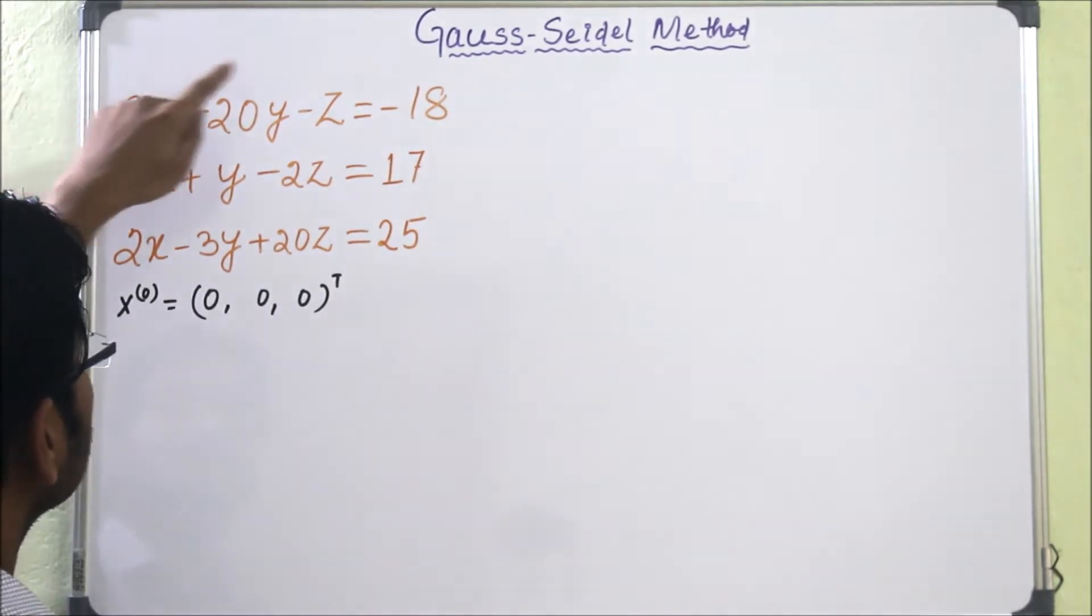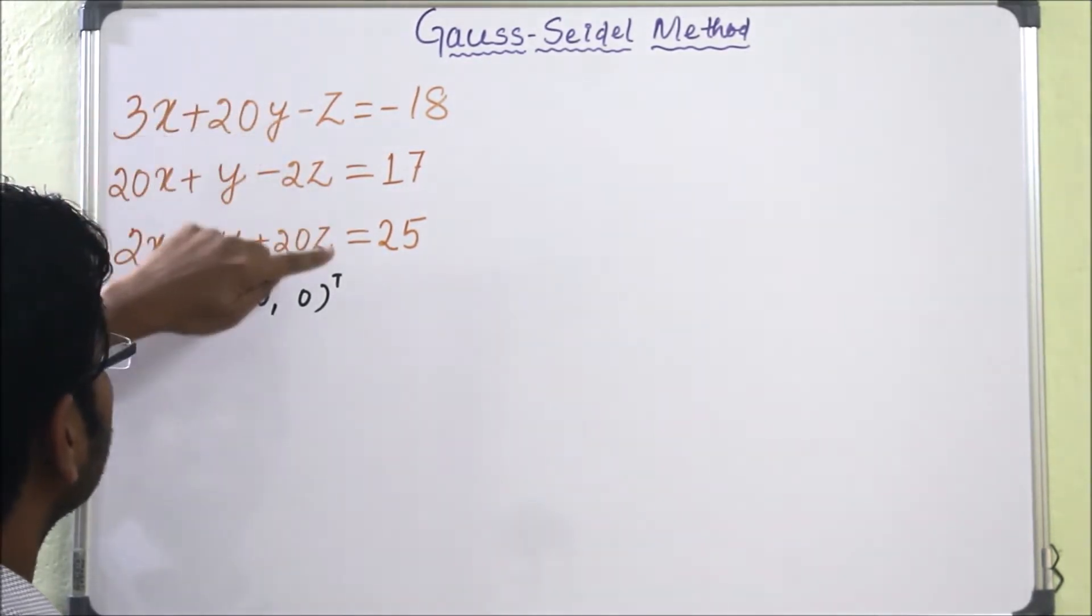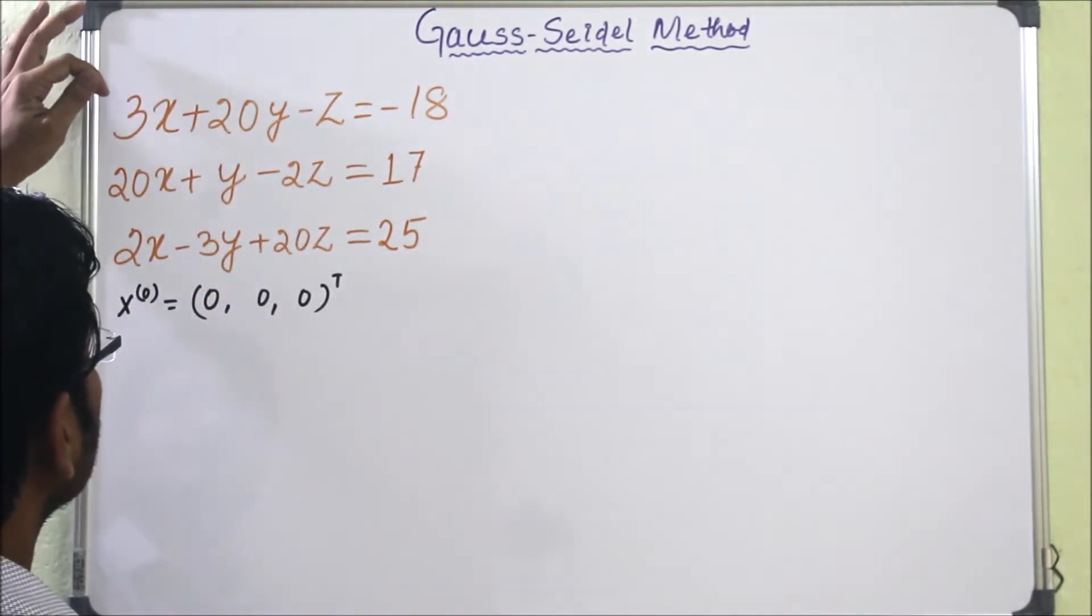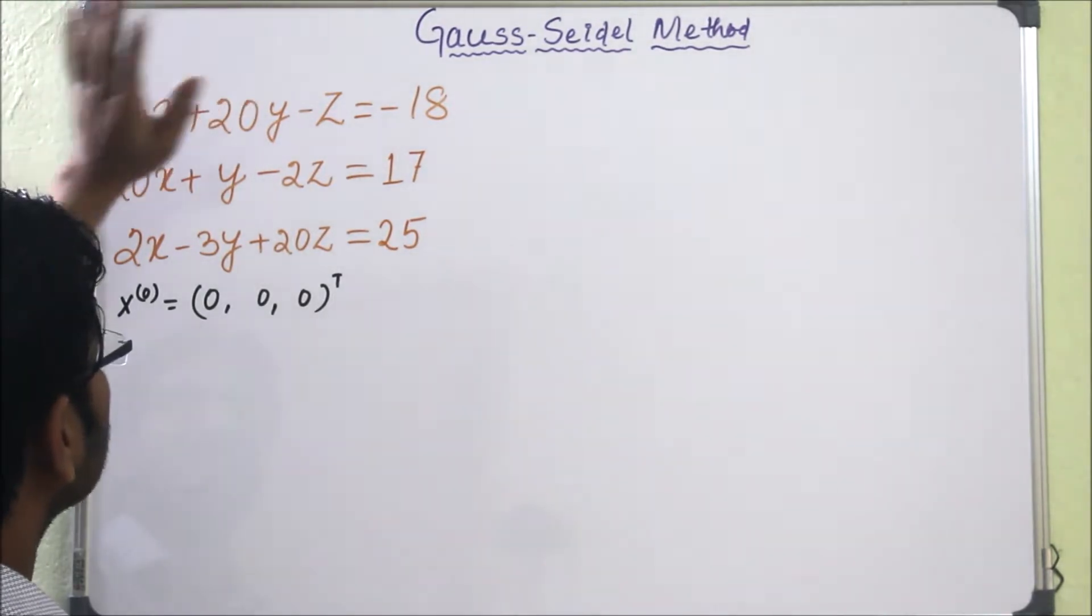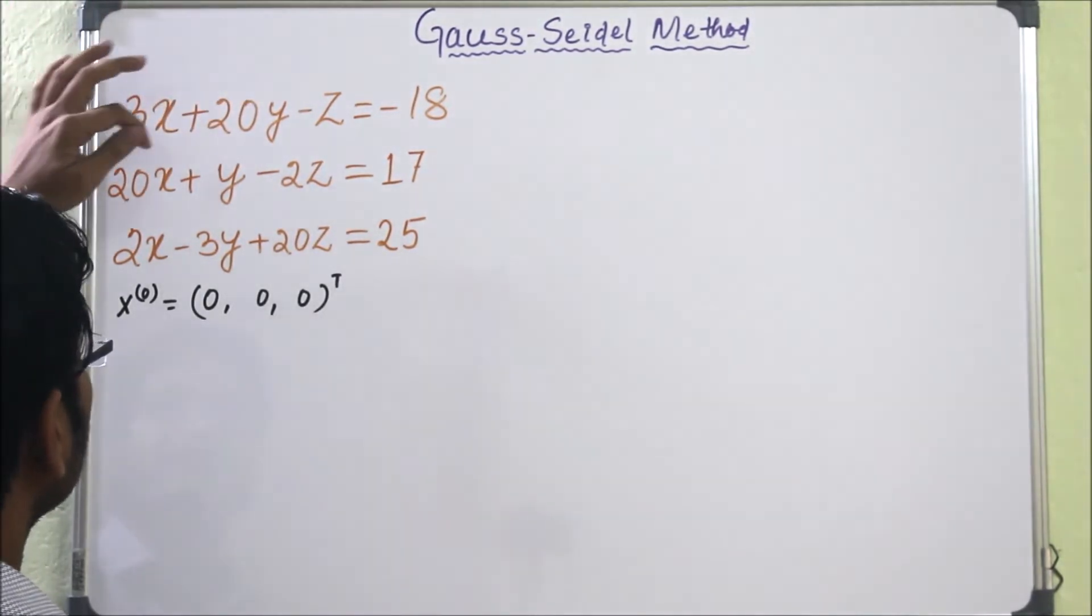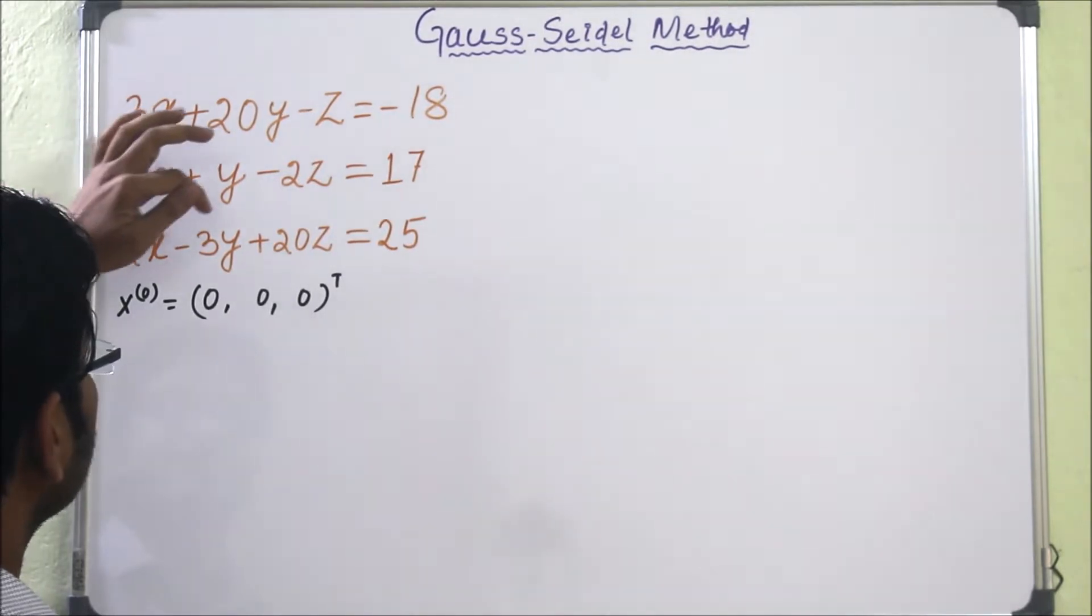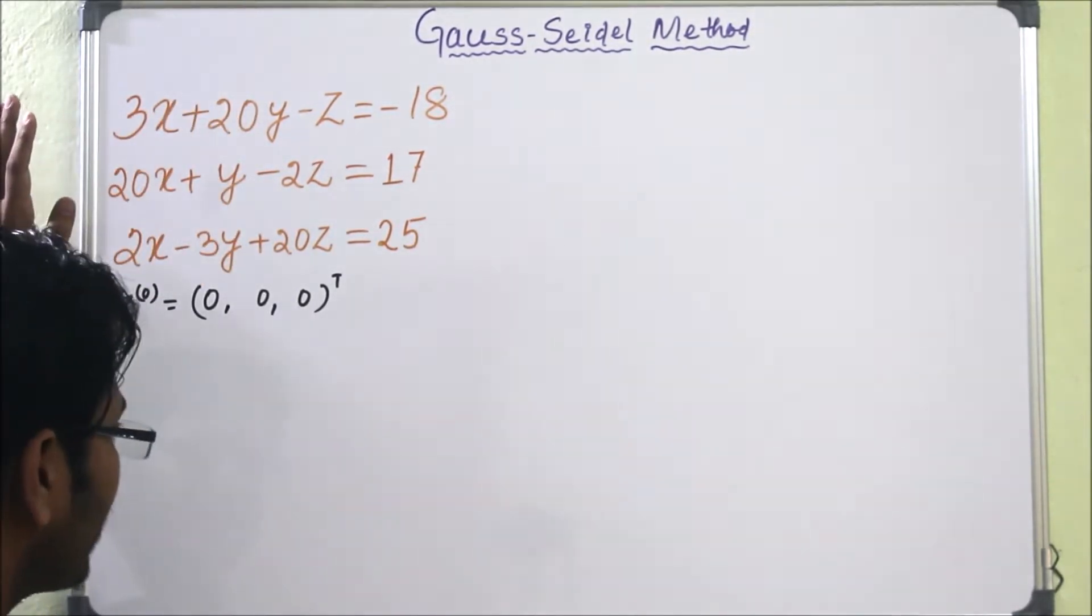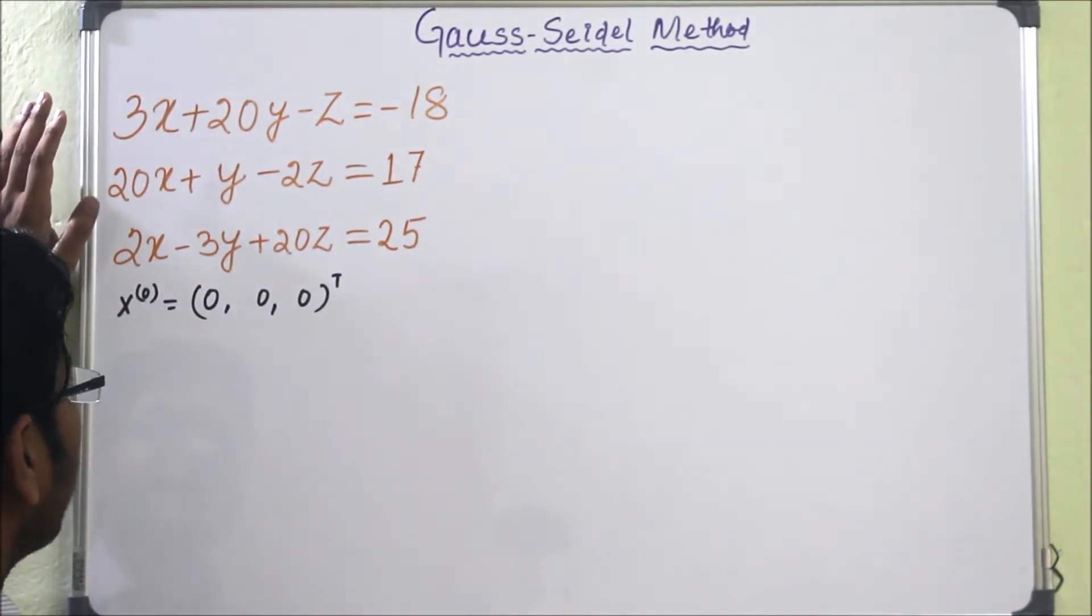Now that means if I see the coefficient matrix here, the coefficient matrix will be 3, 20, minus 1 first row, 20, 1, minus 2 second row, 2, minus 3, 20 third row. So that means we have to see that the A matrix is diagonally dominant or not.